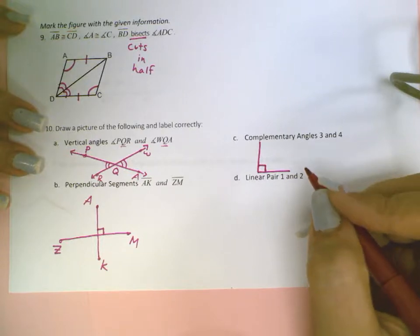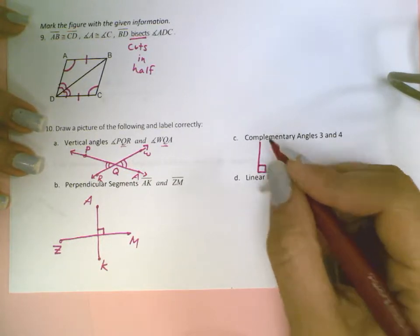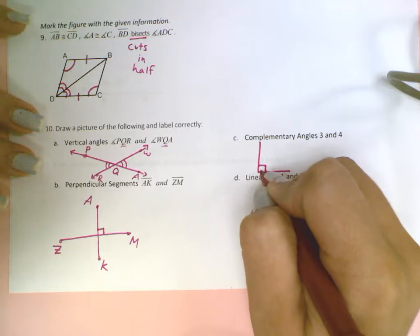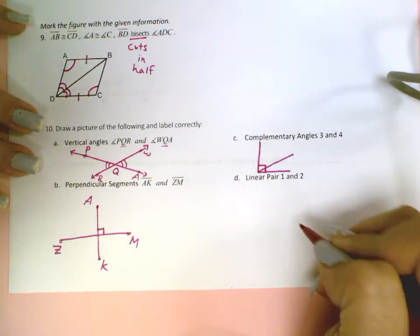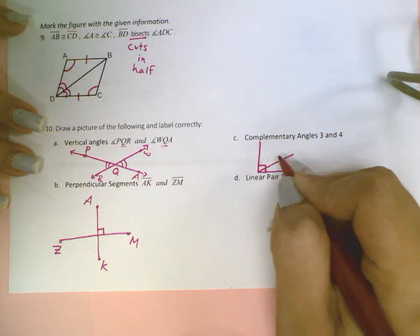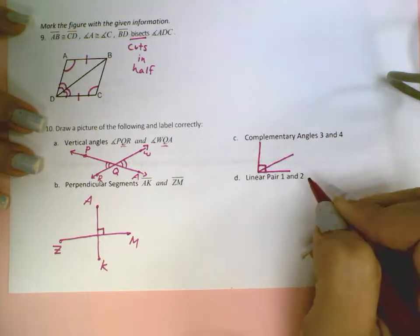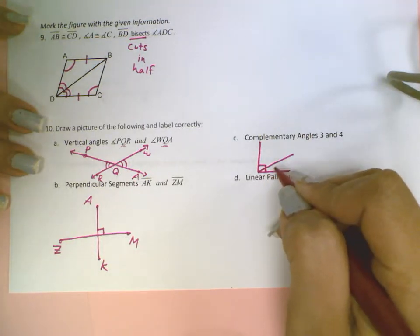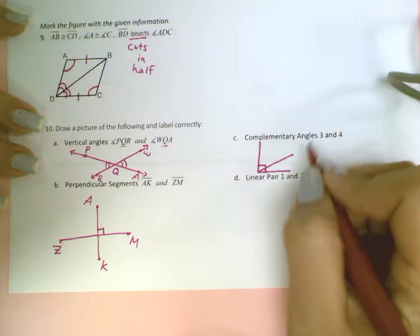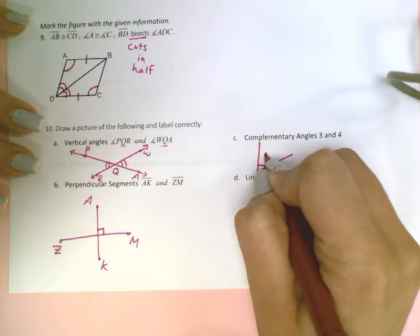Then from there, I need two angles that when I add them together is going to give me this 90. So I can draw a line like this. So now I've broken down my angle. It doesn't need to be bisect, doesn't need to be right down the middle, anywhere. So now I can say this is angle 3 and this is angle 4.